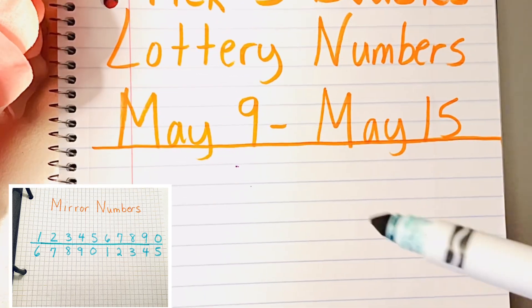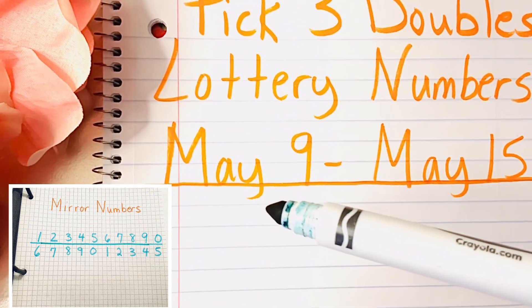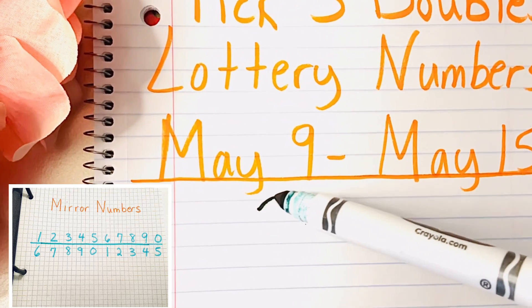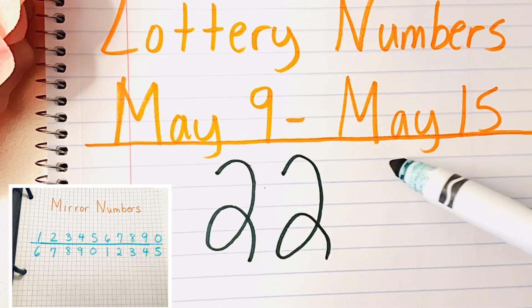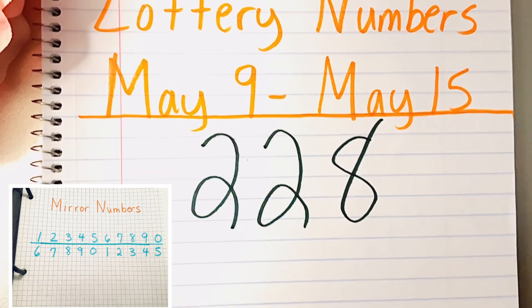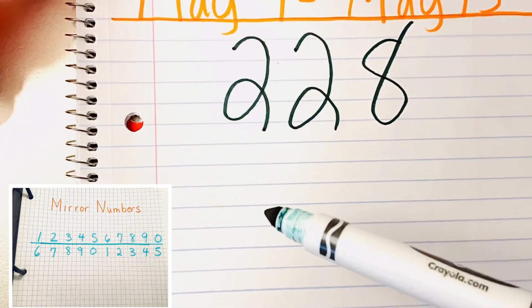On the next page are the double twos. And so we have 228. Let me write that down. And the next double two is 232.